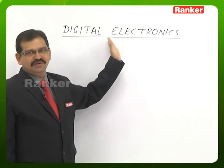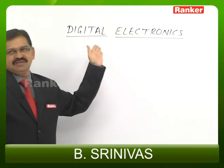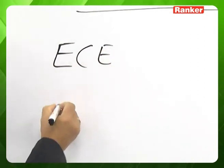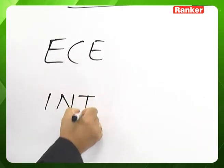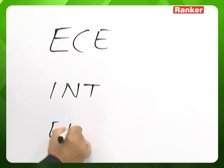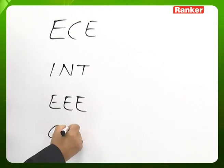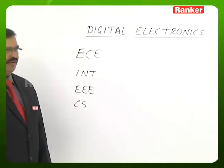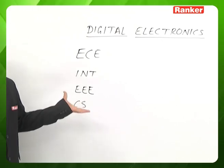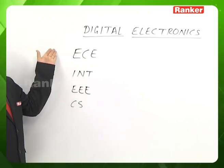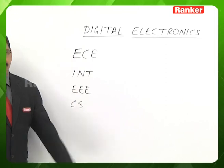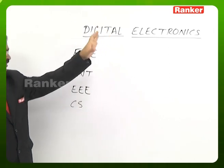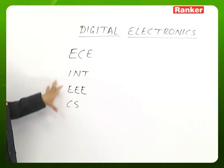Digital Electronics is a common subject for Electronics and Communication, Instrumentation Engineering, Electronic Engineering, Computer Science and Information Technology branches in the GATE exam. It is also a common subject in the IES exam for ECE and EEE branches. The major syllabus of this subject is common for all these branches.